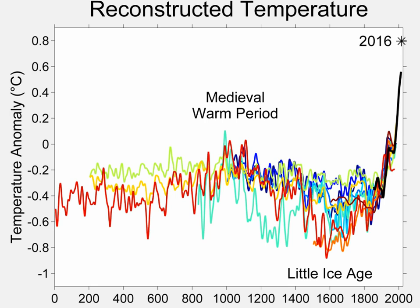This showed global patterns of annual surface temperature, and included a graph of average hemispheric temperatures back to 1400, with shading emphasizing that uncertainties to two standard error limits were much greater in earlier centuries.